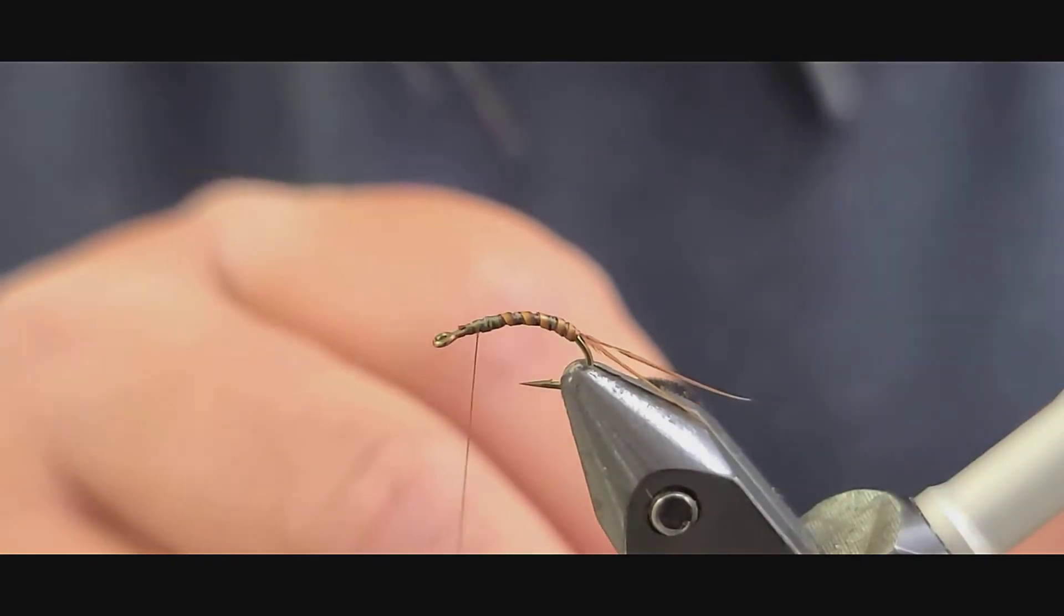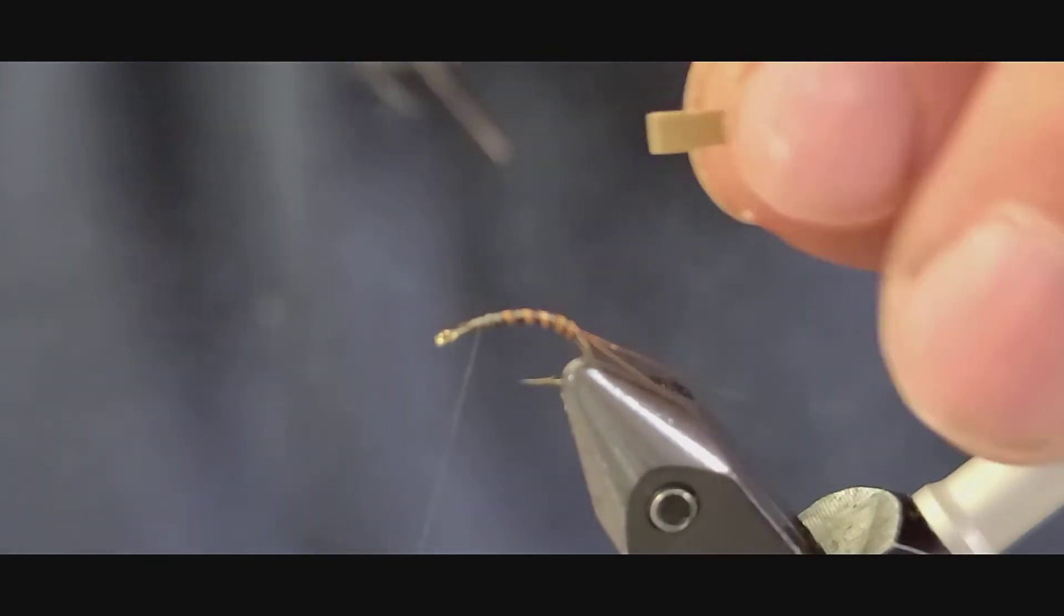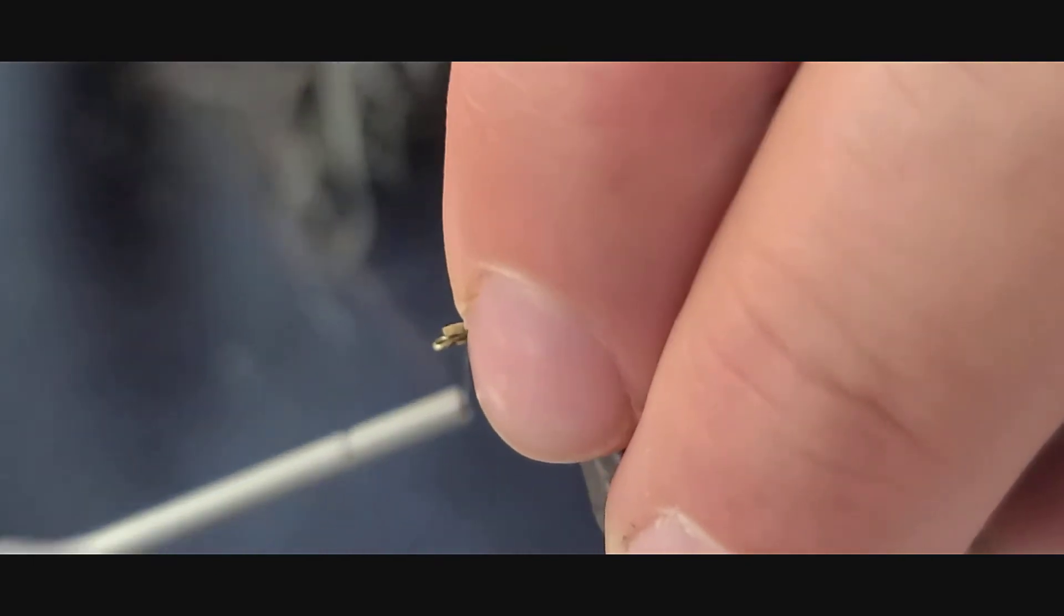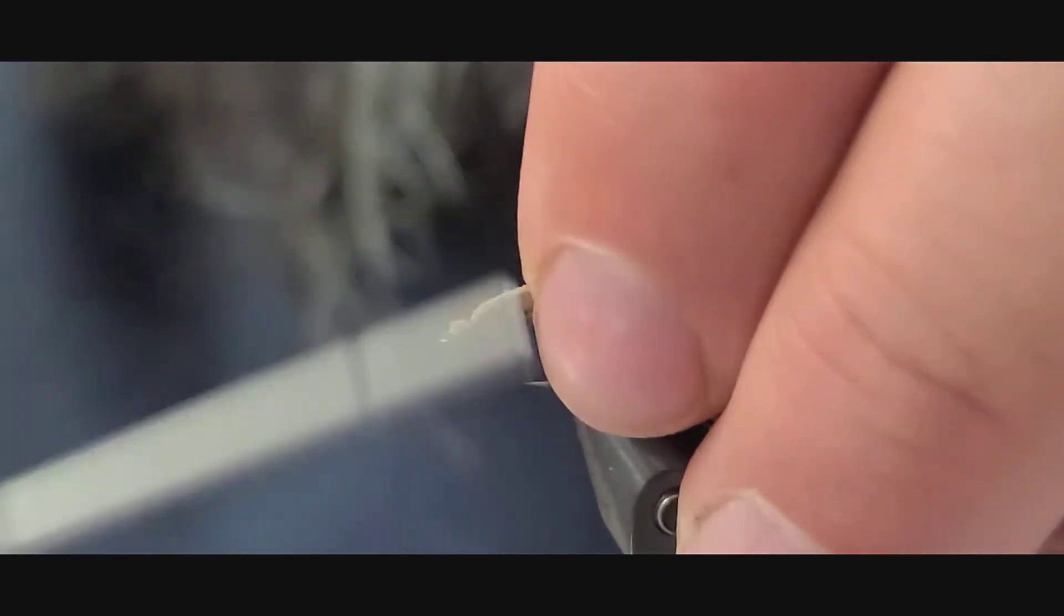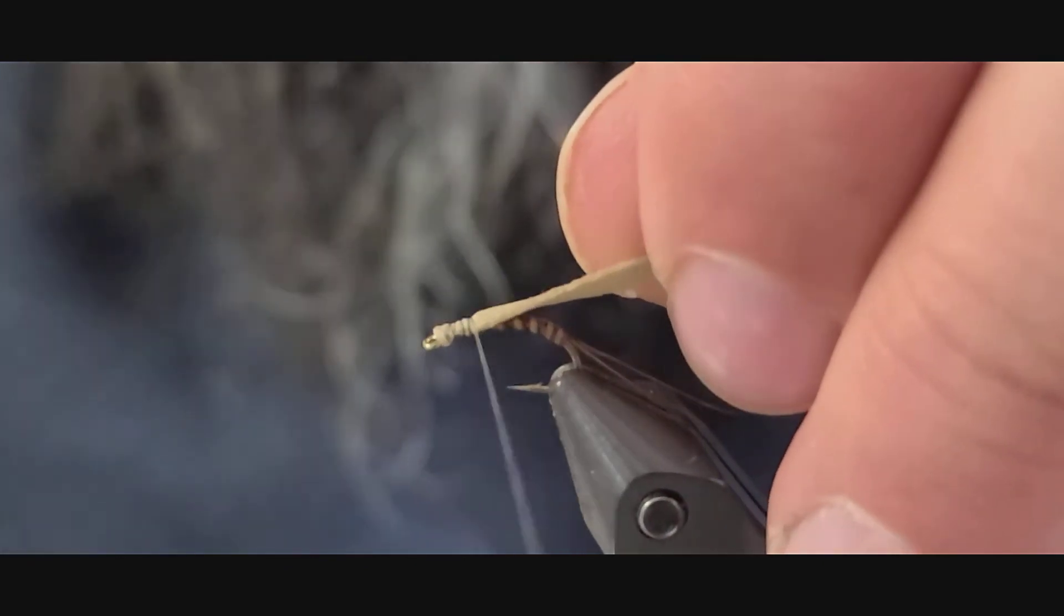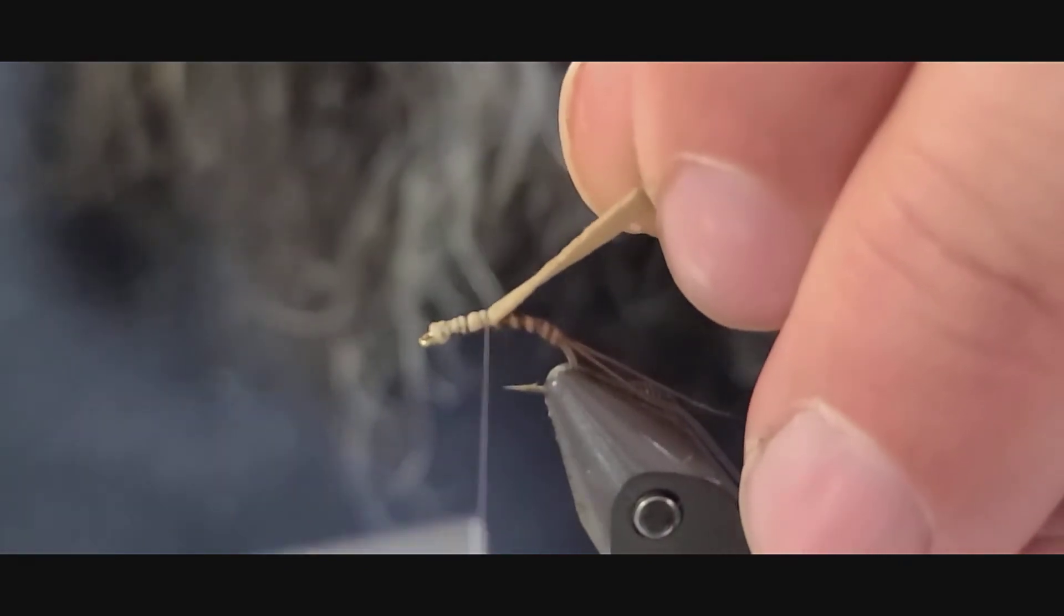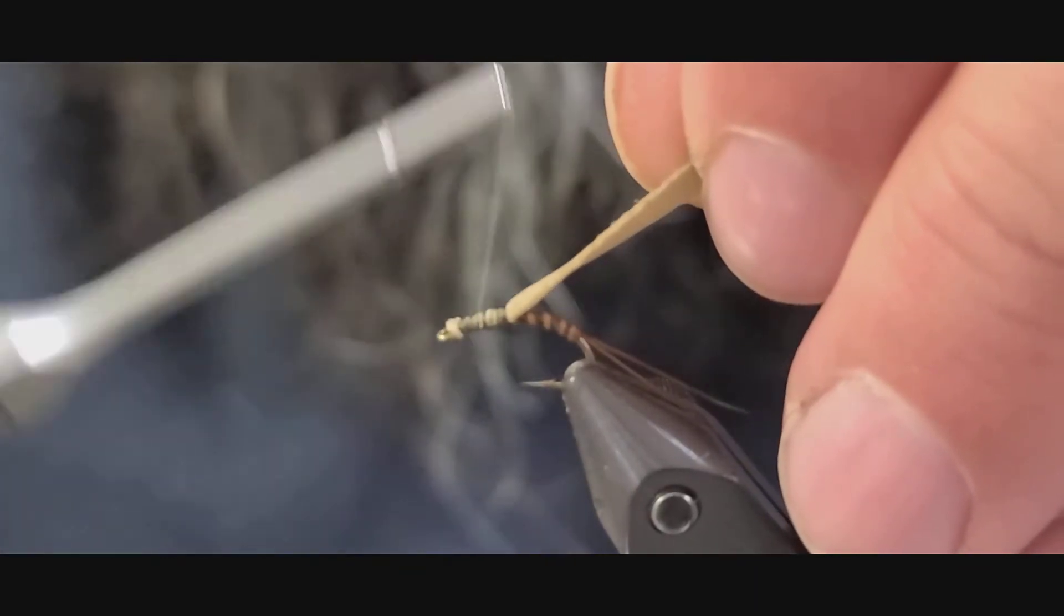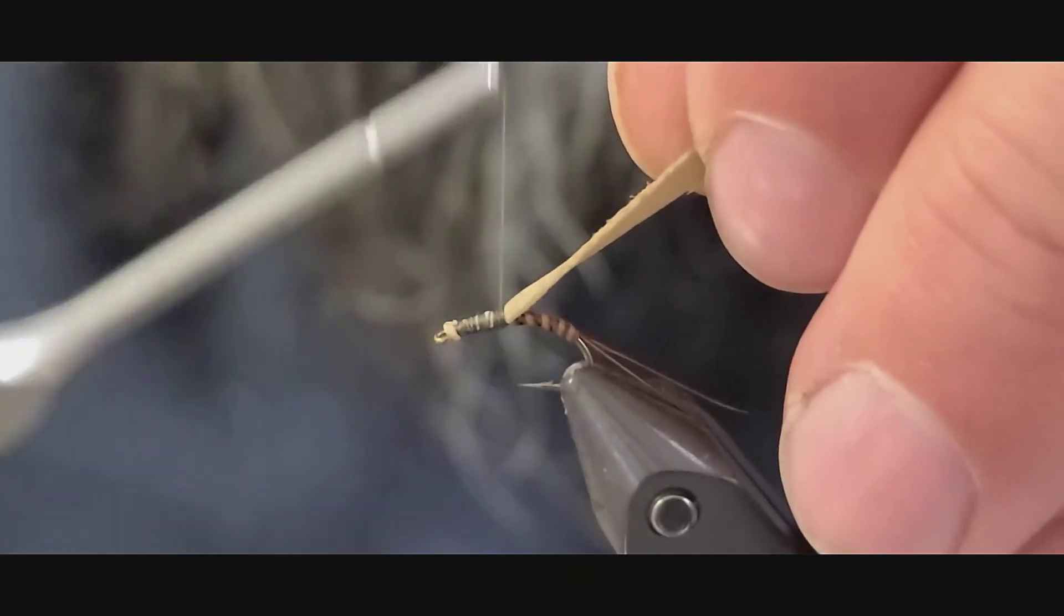Next thing we're going to do is take a piece of one millimeter, this is the razor foam tan. Start right behind the eye of the hook. Bind that down pretty good. You want to go about a quarter of an inch back from the eye of the hook. Get it secured in here good.